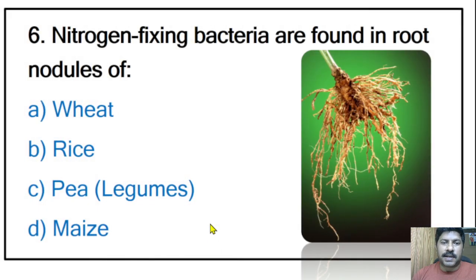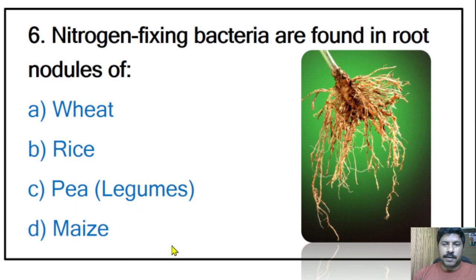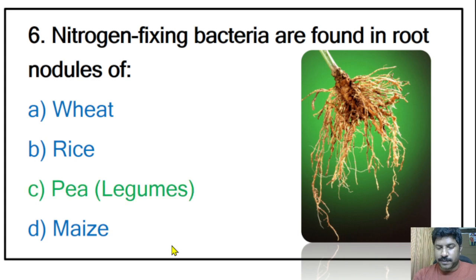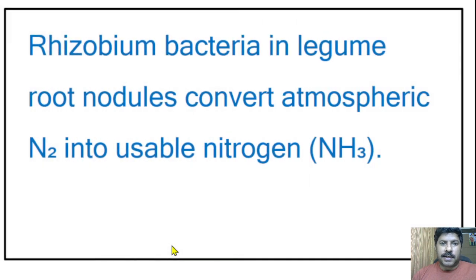Sixth question: nitrogen-fixing bacteria are found in the root nodules of wheat, rice, pea, or maize? The correct answer is pea — legumes. Rhizobium bacteria in legume root nodules convert atmospheric nitrogen into usable nitrogen, that is ammonia.